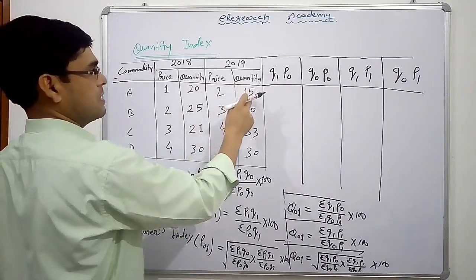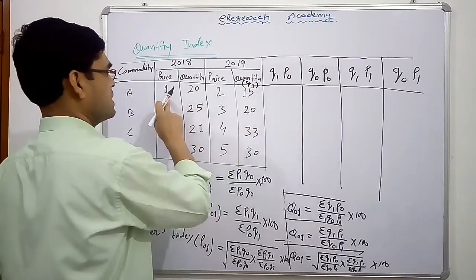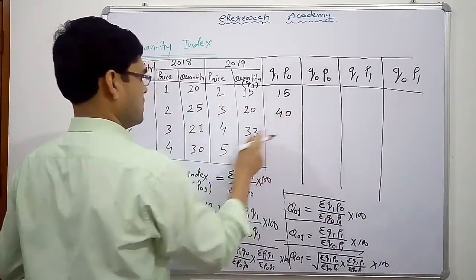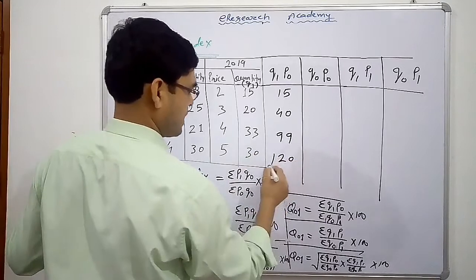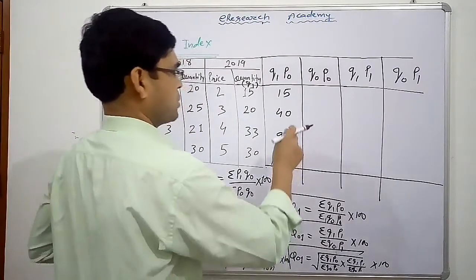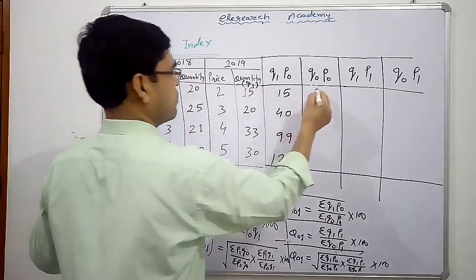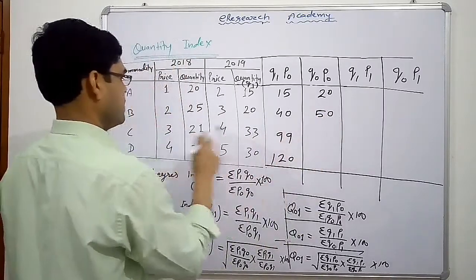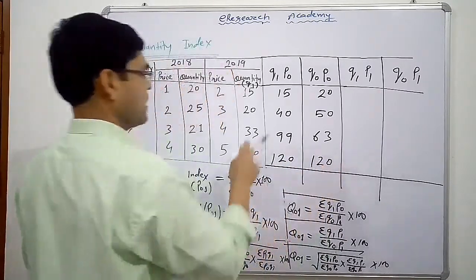Q1 P0 — quantity of current year Q1, into base year price P0: 15 into 1, 20 into 2, 33 into 3, plus 30 into 4. Next, Q0 P0 — base year quantity into base year price: 20 into 1 equals 20, 25 into 2 equals 50, 21 into 3 equals 63, 30 into 4 equals 120.